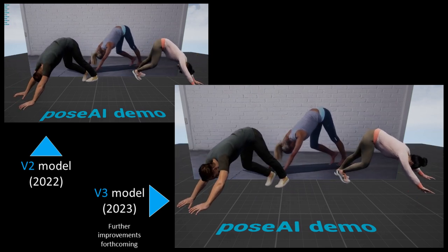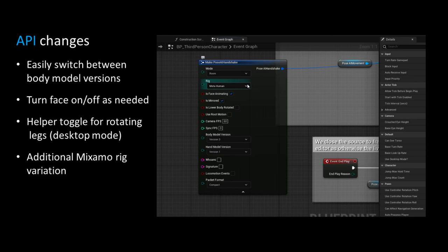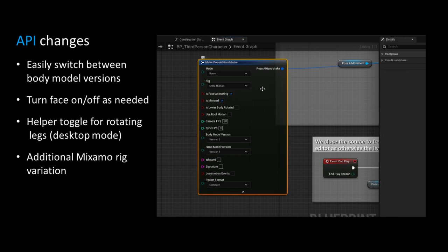We have updated our Unreal plugin and demo project, adding options to the handshake for face and the version 3 model. We included a helper toggle to rotate the lower body 180 degrees if needed for desktop mode.